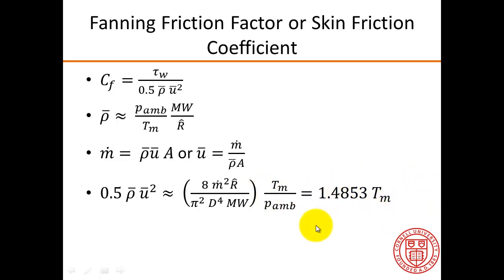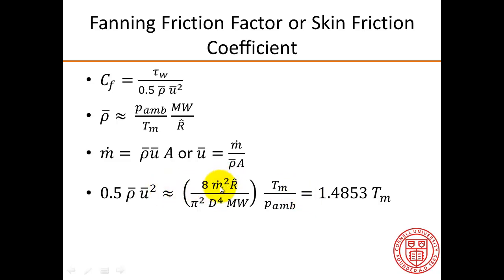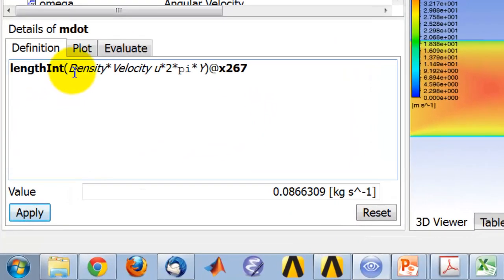I've plugged in the numbers and got this constant, and I'll show you how I evaluated M dot. The denominator of the mixed mean temperature when we evaluated it previously was basically M dot, so I copied that expression and created a new variable and called it M dot. Here's the M dot I got.